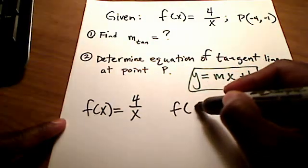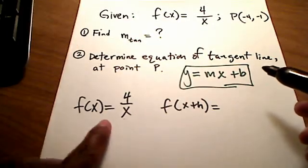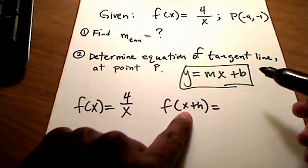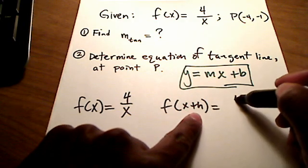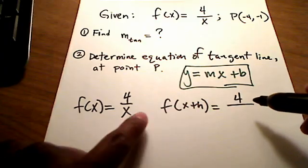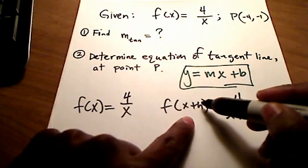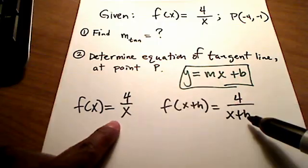Let's go find what f of x plus h is. Well, that simply means that anywhere I see an x, I need to plug in instead this new independent variable, which is x plus h. It's just going to be 4 over, instead of x, 4 over x plus h. So whatever's inside this parentheses, that's what x is being replaced with.